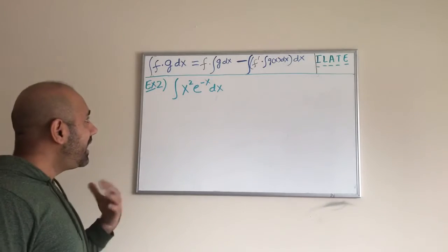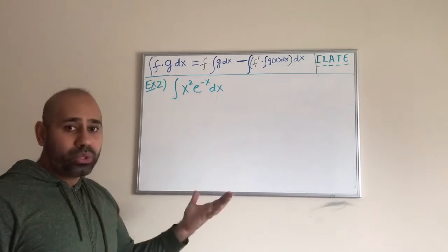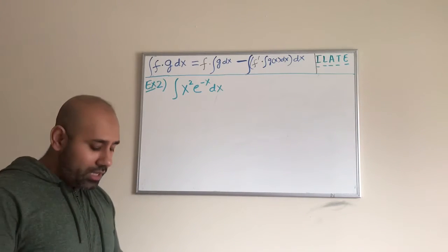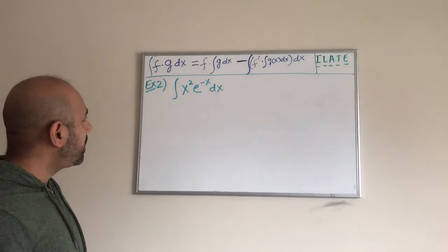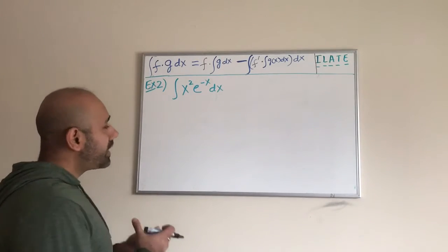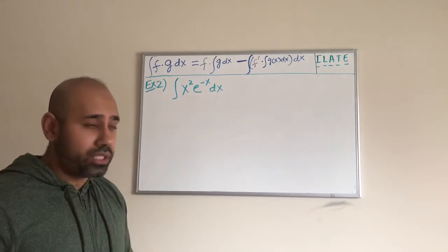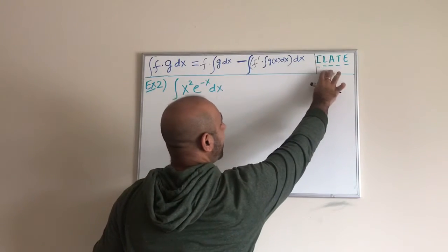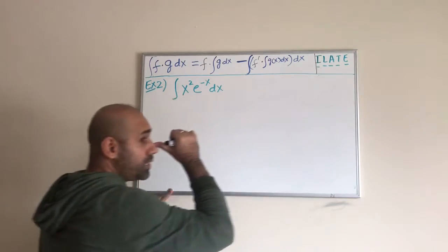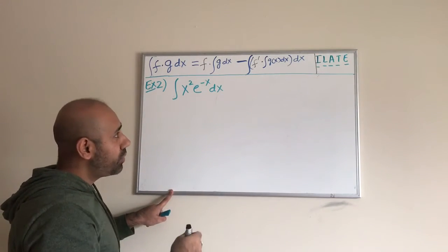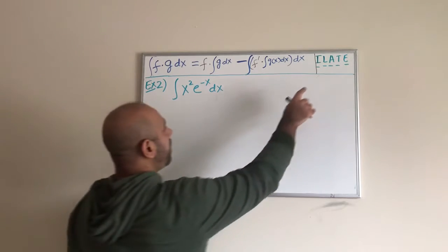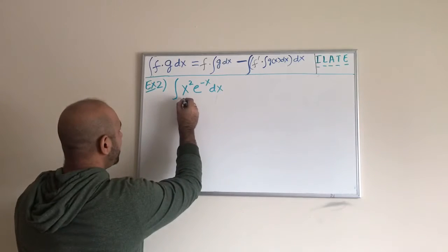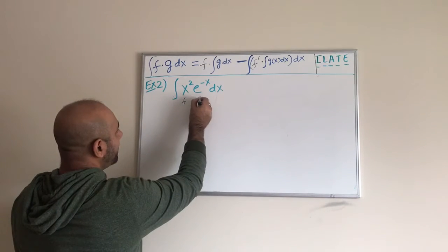This is example two. Let us try and see how we can use the integration by parts method to evaluate this indefinite integral. The first thing we are going to do is figure out which function to use as the f function and which to use as g. Looking at this, and keeping the order in mind, we obviously want to use the algebraic function first and then the exponential function. So I'm going to treat the algebraic one as my f function and the exponential as my g function.